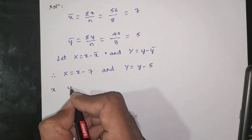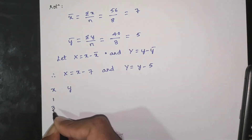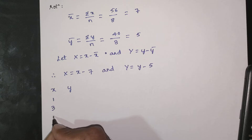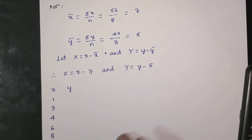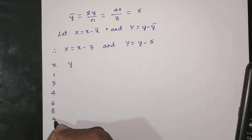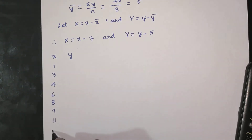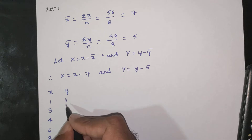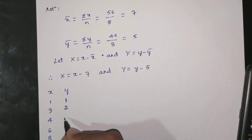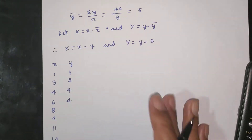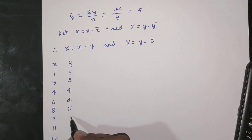The x values are: 1, 3, 4, 6, 8, 9, 11, 14. The y values are: 1, 2, 4, 4, 5, 7, 8, 9. We will now compute the deviation columns X and Y for each data point.